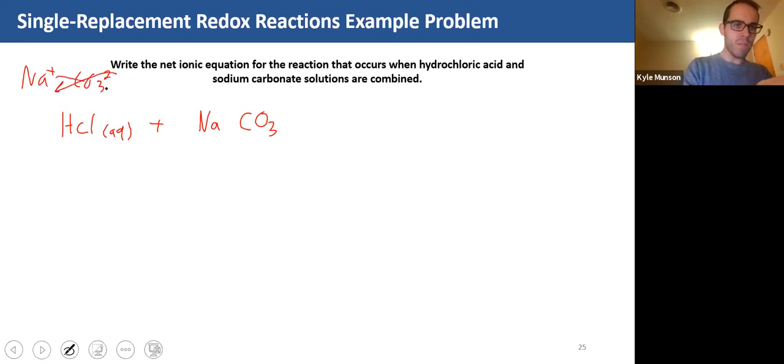So I need two sodiums, so there's gonna be two there. Aqueous gives me, so this is a double replacement reaction, so we're gonna get H2CO3 aqueous plus sodium chloride.